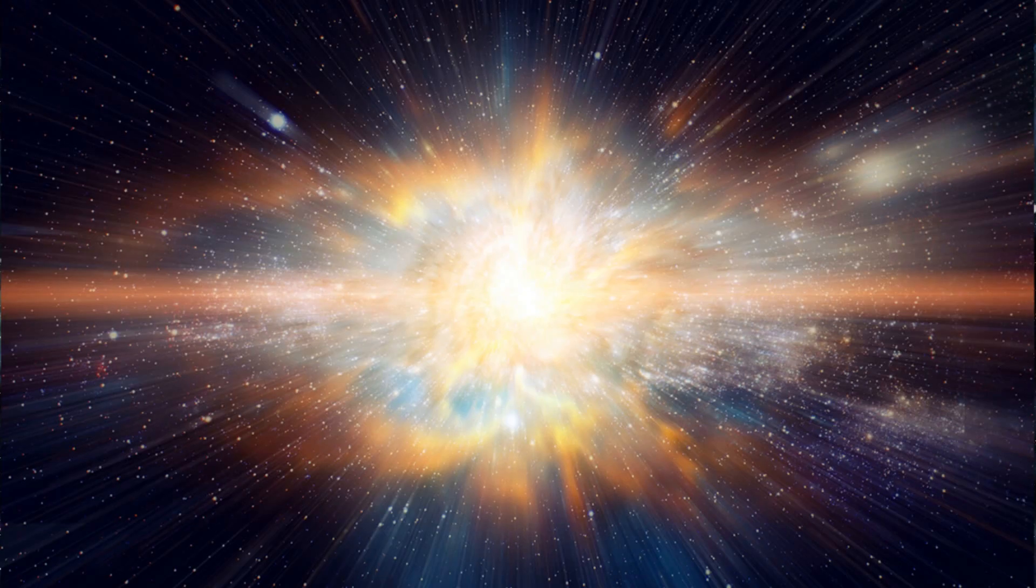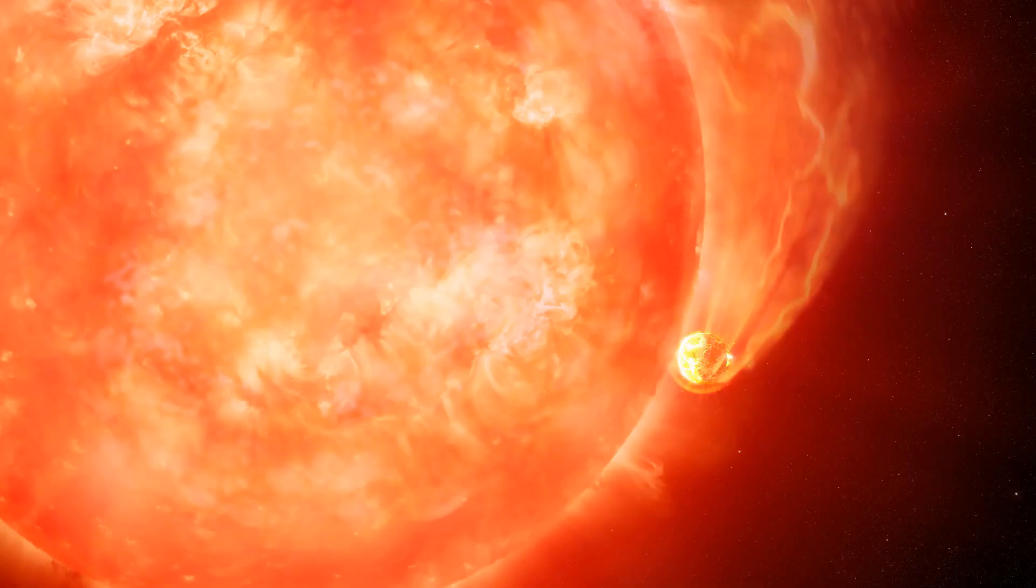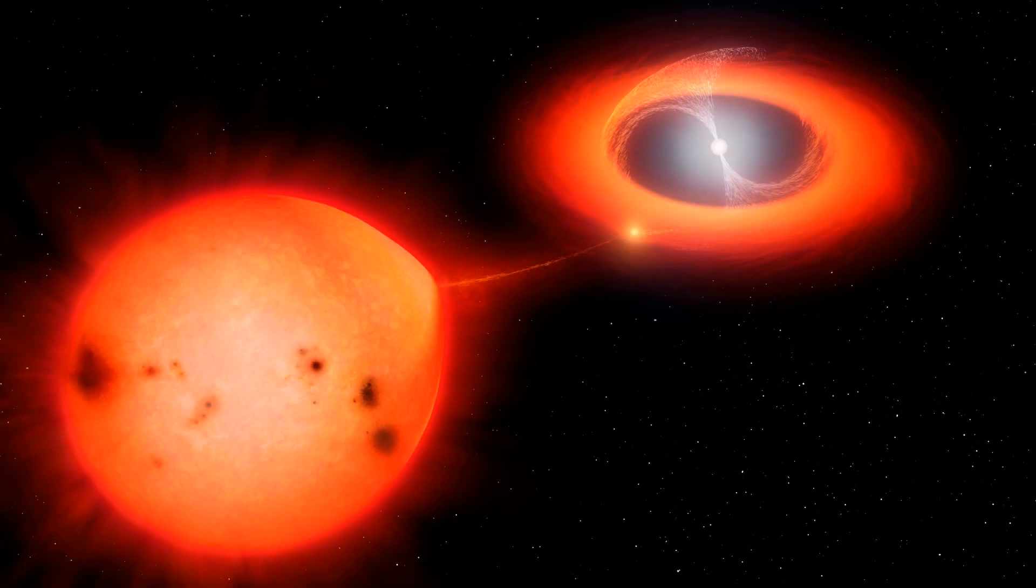There are a couple of ways this stellar feast can play out. If the red giant engulfs the smaller star completely, the stolen gas can fuel further expansion and potentially lead to the red giant exploding as a supernova. In some cases, the red giant might not completely swallow its companion but instead slowly siphon off its mass over a long period. This can leave behind a white dwarf or even a neutron star orbiting the bloated red giant.